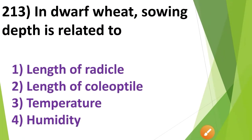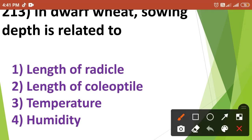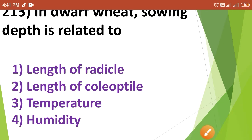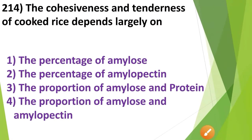In dwarf wheat, sowing depth is related to: 1. Length of radicle, 2. Length of coleoptile, 3. Temperature, 4. Humidity. The correct answer is Option No. 2 — length of coleoptile.